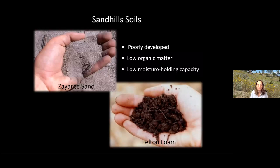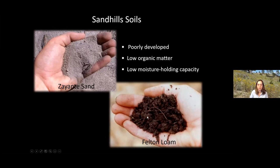The Sandhills are derived from the sandstone formation laid down millions of years ago, so the soil is very sandy. It's known as a Zayante sand soil — that's the official soil name. When I say sandy, it is pretty much sand: anywhere from 92 to 96% sand particles, just a tiny bit of silt and very little clay. As you can see, if you're a gardener, you can tell by looking at it that it's very poorly developed, meaning it has very low organic matter, very low nutrients, and very low water-holding capacity because of the lack of organic matter and the coarse texture. Compare it to the Felton loam soil grabbed from underneath a redwood tree — that's the difference in soil conditions in the Sandhills versus the coast redwood forest.